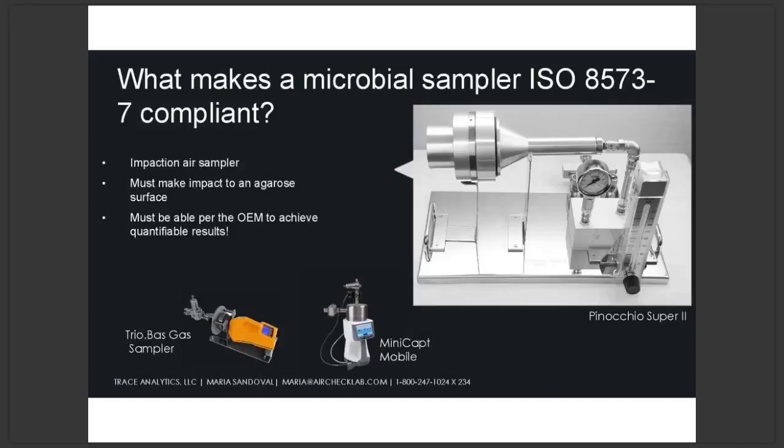Now that you have an idea of what you're getting yourself into, you need to pick the appropriate piece of equipment to sample. ISO 8573-7 requires an impaction sampler that's qualified and validated for reporting quantitative results — this requires reading the fine print. Some of the lightest and most affordable pieces of equipment are not capable of reporting quantitative results; they can only report qualitative presence or absence. Here at Trace, we use the SAS Pinocchio Super Tube Kit, but Trio Boss and Eppendorf have their versions as well. This equipment is not the same as an ambient or environmental air tester.